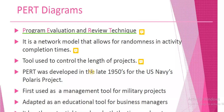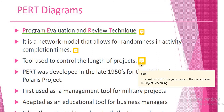PERT diagram is a tool that is used to control the length of projects. To construct a PERT diagram is one of the major phases in project scheduling. It gives the project total length control and is one of the key phases in project scheduling.